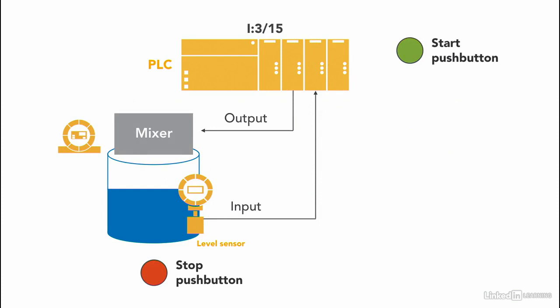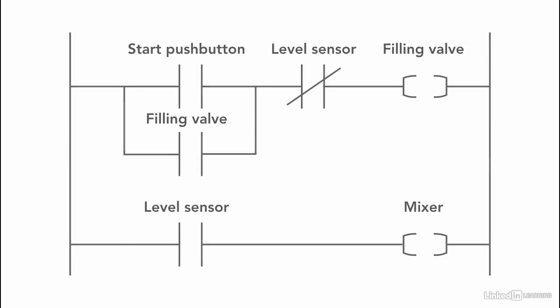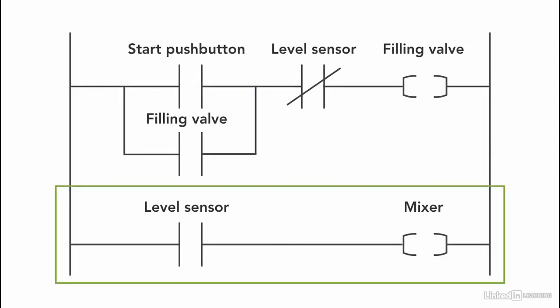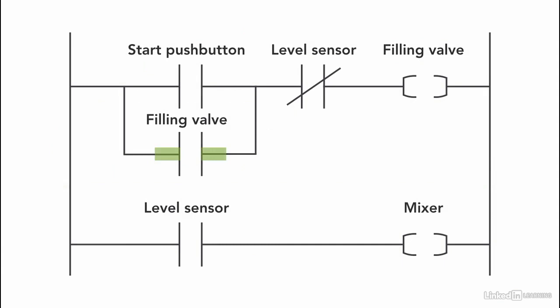Now once the level sensor is on, the mixer starts mixing. So I use an XIC instruction and a regular output for the mixer. Now as soon as the liquid reaches the desired level, the valve closes and the mixer starts.